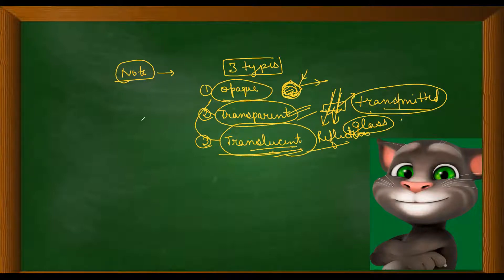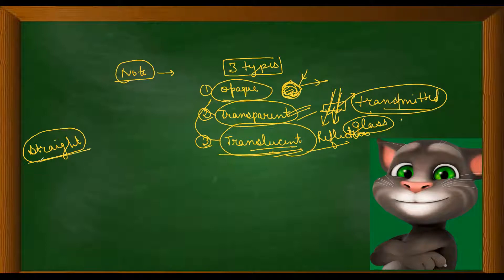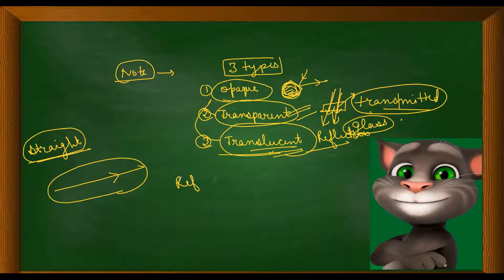Now, the property of light that it travels in a straight line — this is the most important property which we are going to discuss in this whole chapter. The property of light that it always travels in a straight line is related to phenomena like reflection and refraction, which we will discuss one by one.